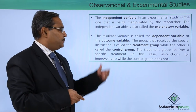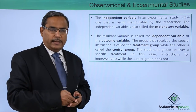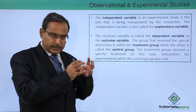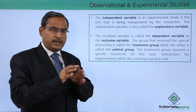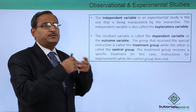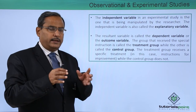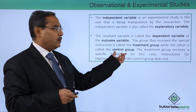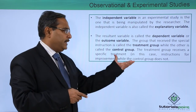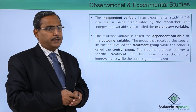The group that receives the special instructions is called the treatment group and the other is called the control group. Let us suppose there is a set of students who are going to be given a certain health drink, and the rest of the students are not going to get the health drink. The treatment group receives a specific treatment — in this case, say instructions for improvement — while the control group does not receive the treatment.